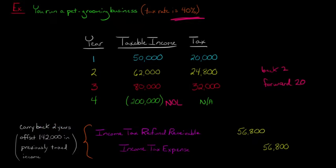We're going to offset the $80,000 and the $62,000. So you're going to be offsetting $142,000 in previously taxed income. Your tax rate was 40%. $142,000 of this current loss, we're going to go back and take that. I get the $142,000 from the $62,000 plus the $80,000. If we get a refund of this, the tax we had paid on those was $24,800 plus $32,000. That adds up to $56,800.